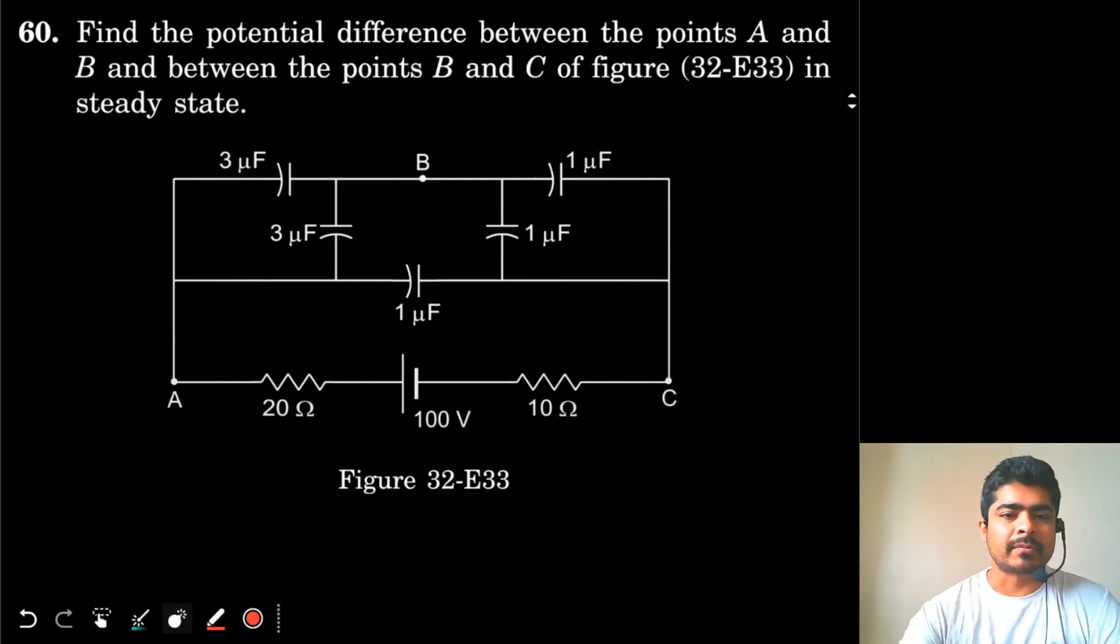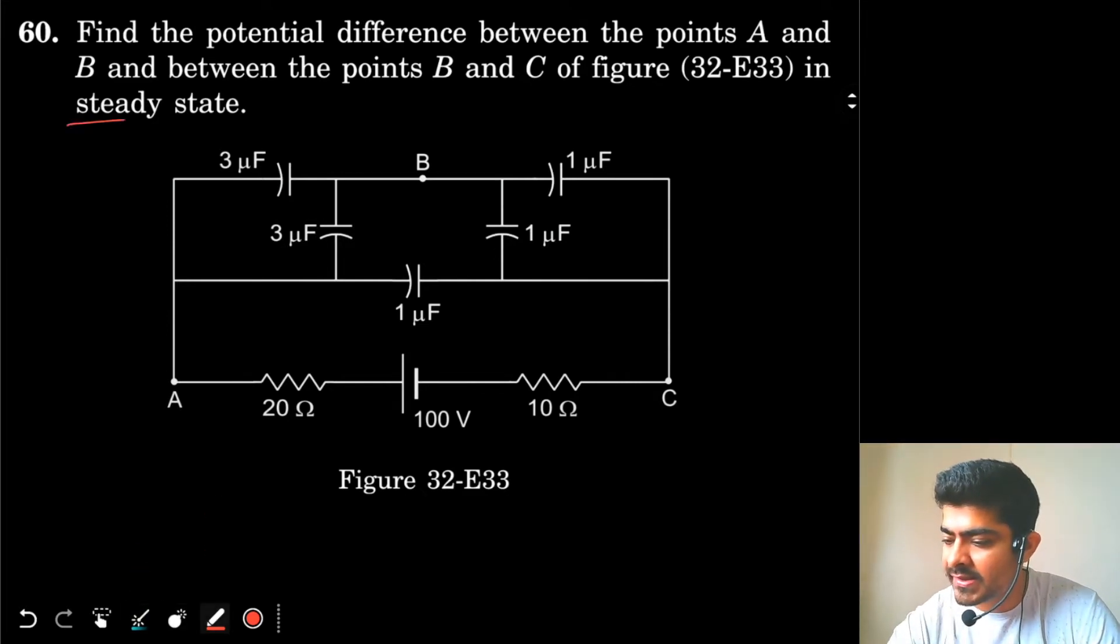Okay, we have question number 60 from H.C. Verma. Find the potential difference between the points A and B and between the points B and C of figure in steady state. Steady state means all the capacitors are fully charged.